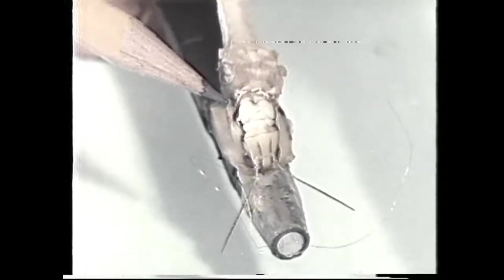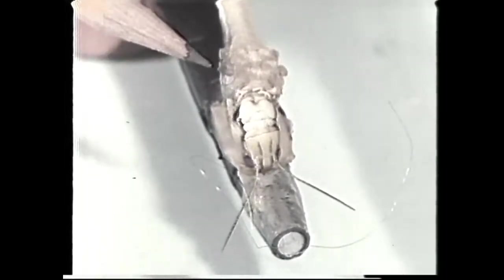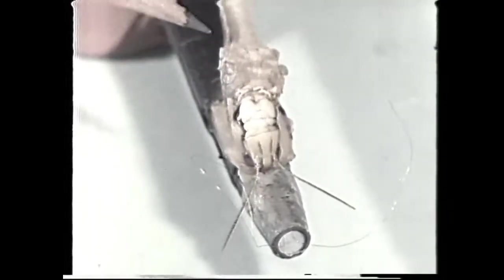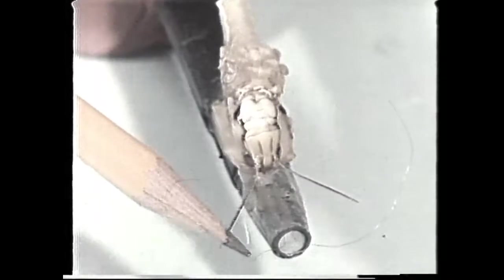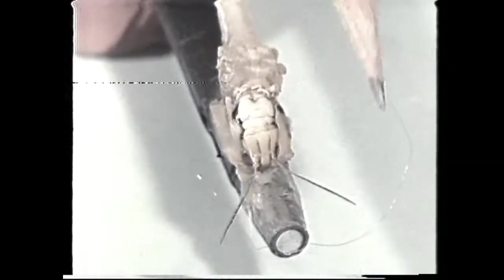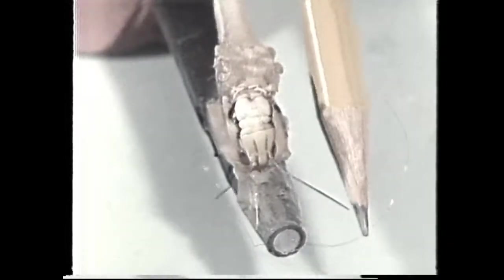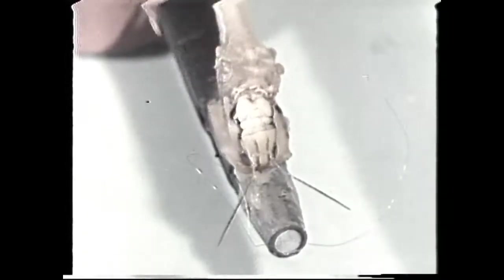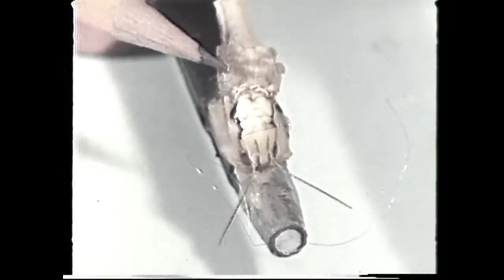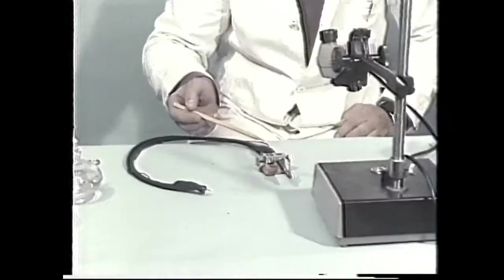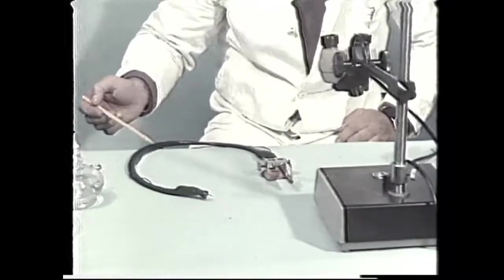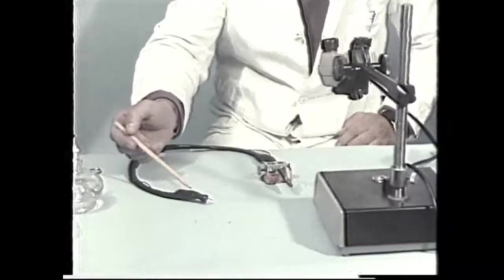There's one of the insect's eyes and there's the thorax with the stumps of the six legs. These fine silver wires are going to be placed under a section of the ventral nerve cord here inside the insect's neck. Connection can then be made along this cable to the recording equipment which we shall see later.